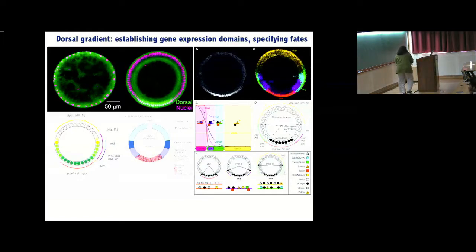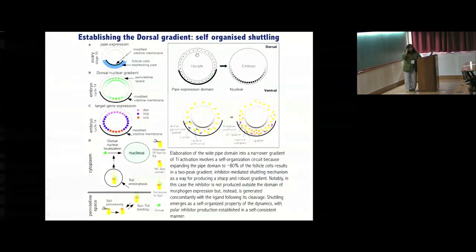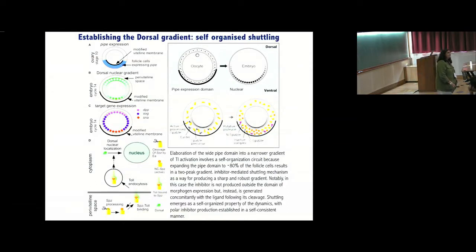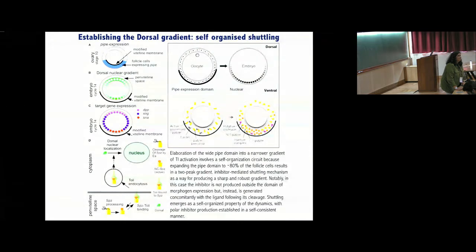Just as the anterior-posterior axis is segmented into stripes of gene expression, the dorsal-ventral axis is also subdivided into spatially restricted patterns of gene expression correlating with specification of distinct cell fates along this axis. All of these expression patterns are defined by the nuclear gradient of Dorsal, and in this panel you can see these genes are expressed in nicely defined subdomains along that axis.